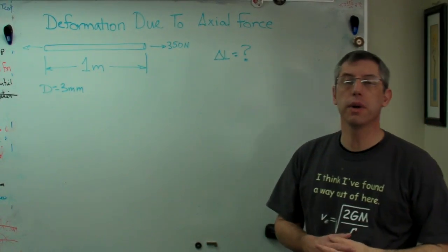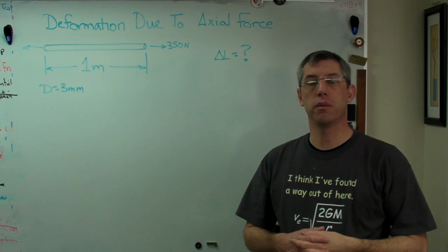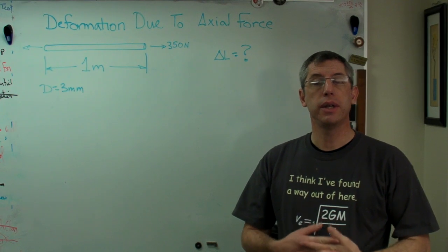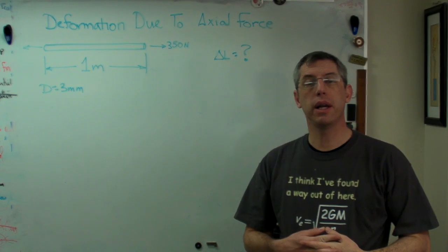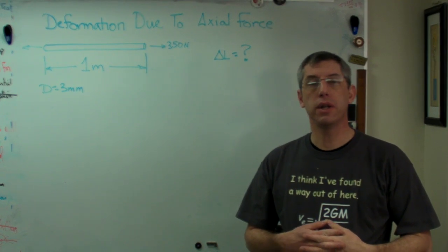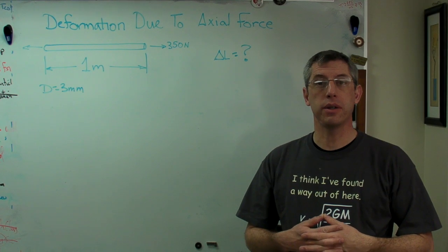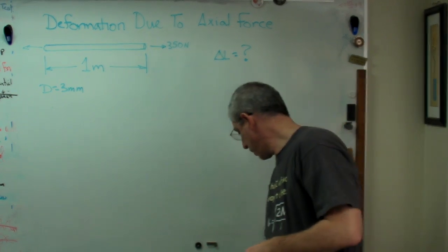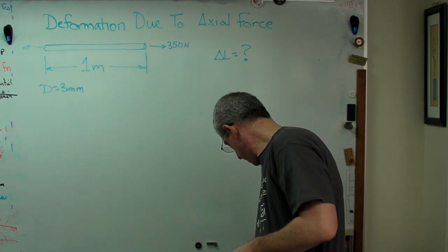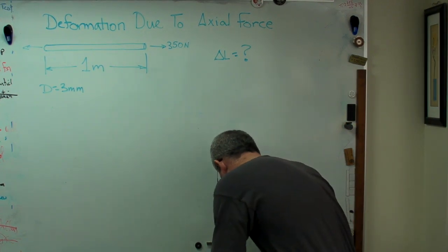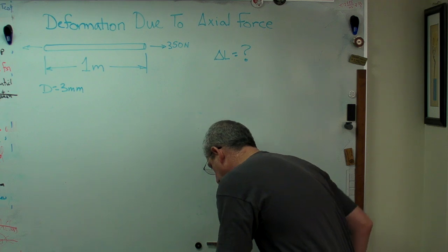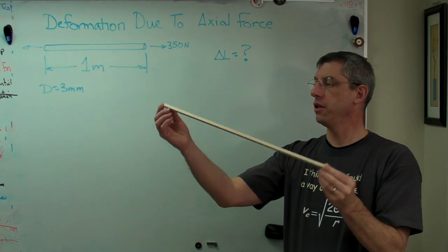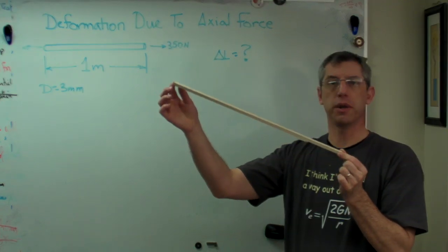One of the first things we're going to need to know when we study strength of materials is how to calculate the change in length in an axial member. An axial member is one like my examples sitting here — this is an axial member, just a little stick of wood.